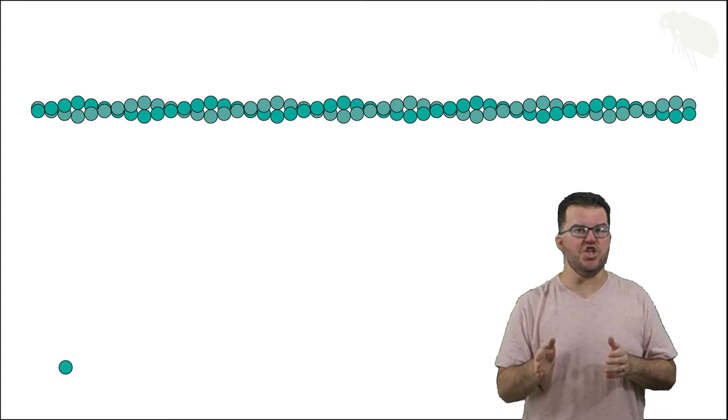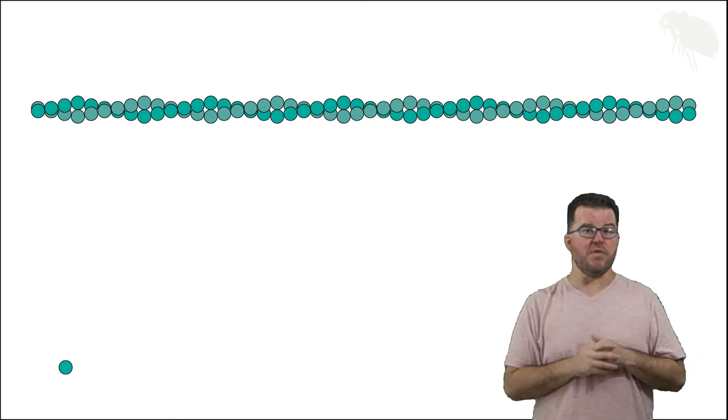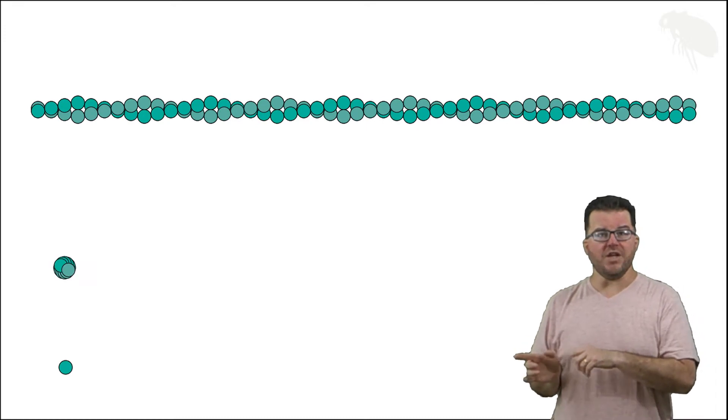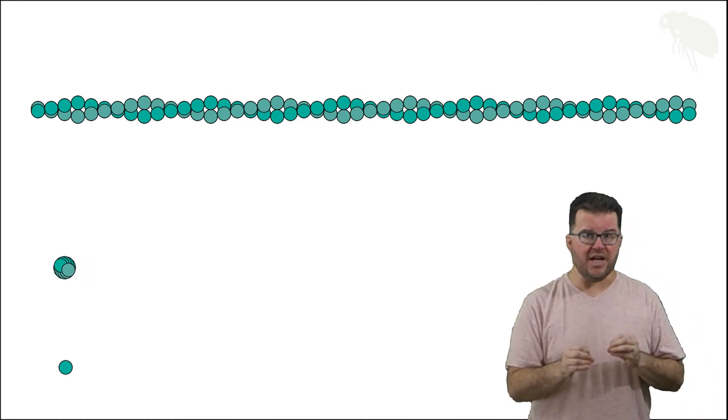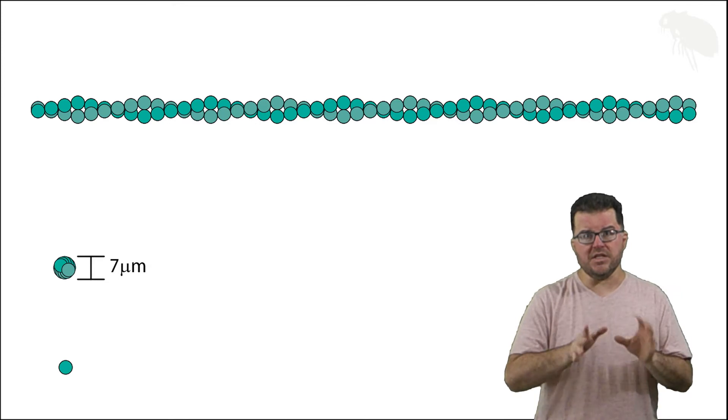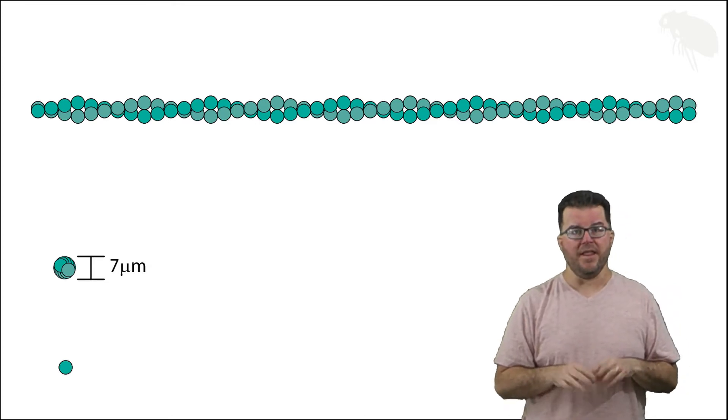They're composed of individual subunits of g or globular actin. There's our microfilament. When we go to the cross section, we can see it's definitely on the small side at around seven micrometers. It's the smallest cytoskeletal element.